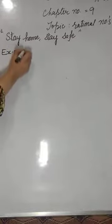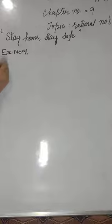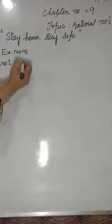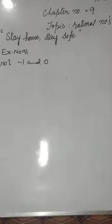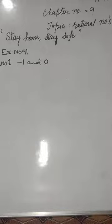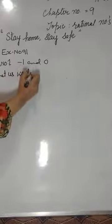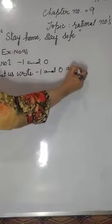Exercise number 9.1, question number 1: List five rational numbers between minus 1 and zero. Minus 1 and zero as rational numbers — let us write minus 1 and zero as rational numbers.